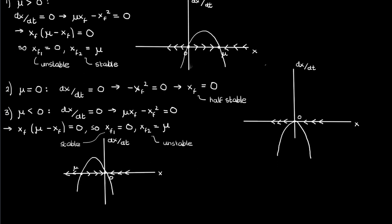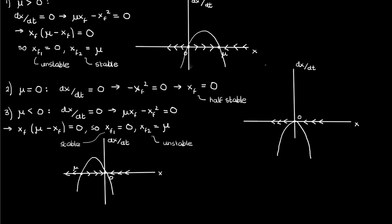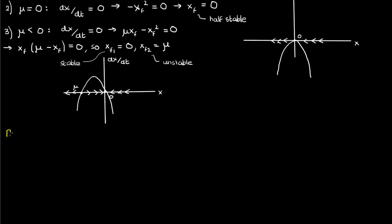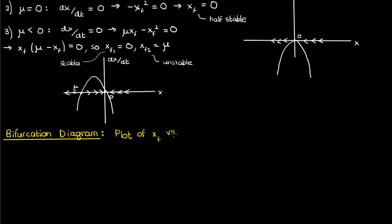There's clearly something going on as we go from positive μ to zero μ to negative μ. To get a better understanding, we'll draw a bifurcation diagram. Recall from the previous video on saddle-node bifurcations that a bifurcation diagram is a plot of the fixed point xf against the bifurcation parameter μ — the parameter being varied to create the bifurcation.